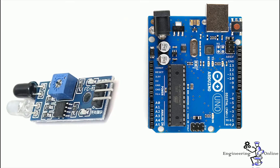Now let's move towards interfacing with the Arduino board. Only three connections are required between the IR object detection module and the Arduino board. First, connect the VCC pin of the module with the 5-volt pin of Arduino. Next, connect the ground pin of the module with the ground pin of Arduino. Finally, connect the Vout pin of the module with digital pin 7 of Arduino. The connections are quite simple — now let's do the same connections on the hardware.